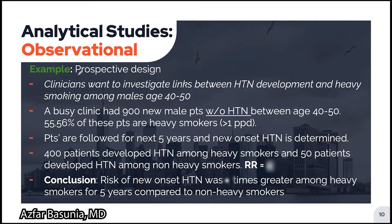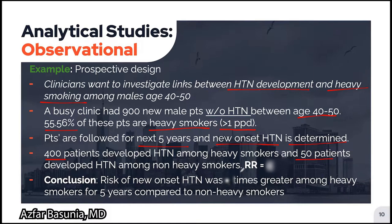Here is an example of a prospective cohort study. Clinicians investigate links between hypertension and heavy smoking among males aged 40 to 50. A clinic had 900 new male patients without hypertension; 55.56% were heavy smokers (greater than one pack per day). Patients were followed for five years. 400 patients developed hypertension among heavy smokers while 50 developed hypertension among non-heavy smokers. The calculated risk ratio was around 4, concluding that heavy smokers had four times the risk of new-onset hypertension. We'll learn more on how to calculate risk ratio in a future video.